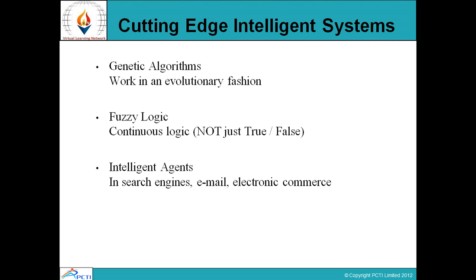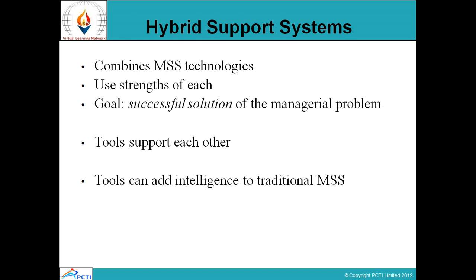Next we talk about cutting-edge intelligent systems. These involve the usage of genetic algorithms, which work in an evolutionary fashion. Fuzzy logic involves continuous logic — not just true or false. Intelligent agents such as search engines like Google, email, and electronic commerce all come under the category of intelligent agents.